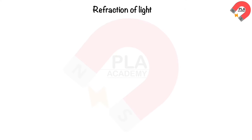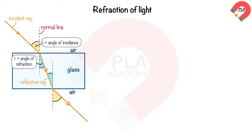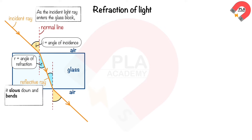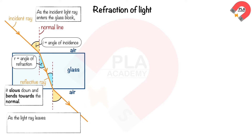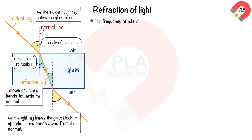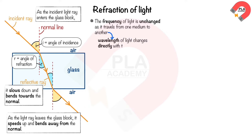Refraction of light. Light refracts when it travels through transparent materials such as glass. As the incident light ray enters the glass block, it slows down and bends towards the normal. As it leaves the glass block, it speeds up and bends away from the normal. The frequency of light is unchanged, but the wavelength changes directly with the speed of light — as light speeds up, wavelength increases; as it slows down, wavelength decreases.